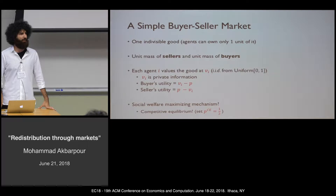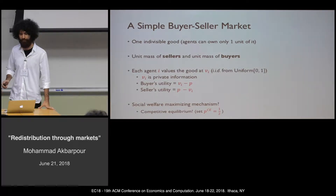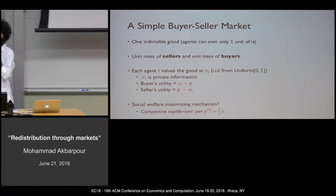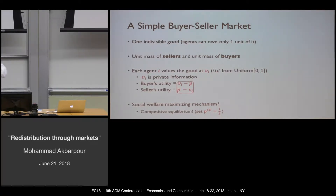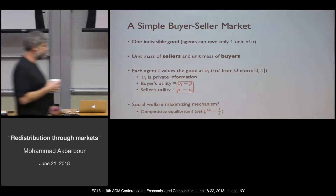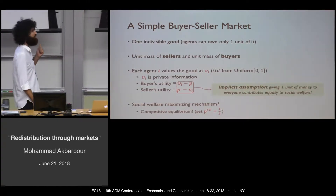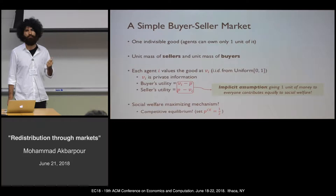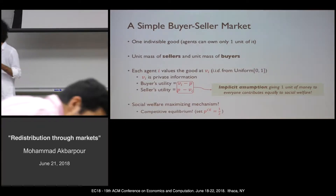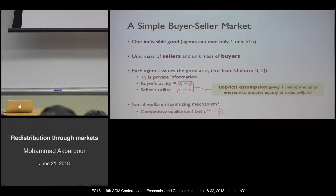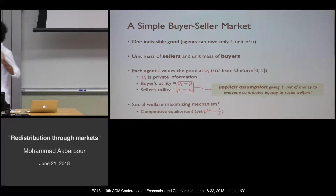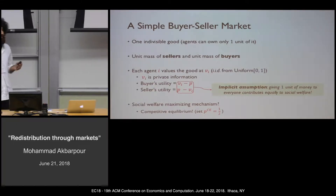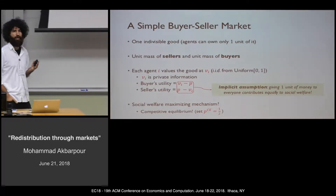We are going to challenge an innocent assumption of this slide. By assuming this specific utility form, which is pretty common in mechanism design, we are essentially assuming that giving one unit of money to everyone in society creates the same social value. So if I get $100 and give it to Bill Gates versus Scott, it doesn't matter for the mechanism.